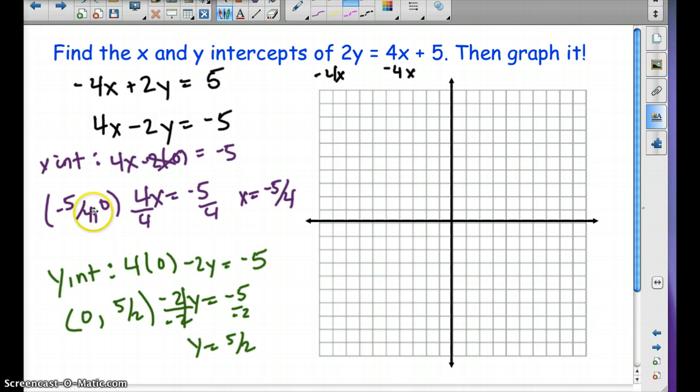So when we graph this, negative 1 and 1 fourths is right here. Negative 1 and 1 fourths comma 0. And then 0, 5 halves, is 2 and 1 half, is up here. And then we're going to connect the dots.